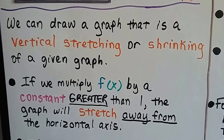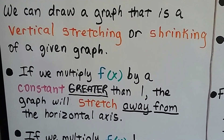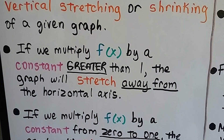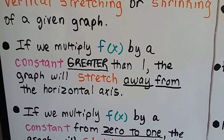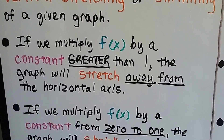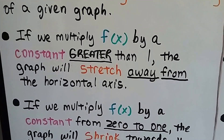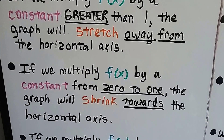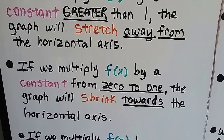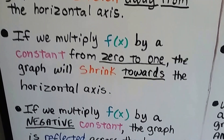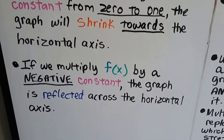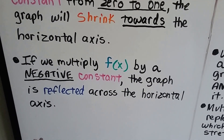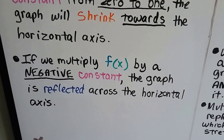We can draw a graph that is a vertical stretching or shrinking of a given graph. If we multiply f(x) by a constant greater than 1, the graph will stretch away from the horizontal axis. If we multiply f(x) by a constant from 0 to 1, the graph will shrink towards the horizontal axis. And if we multiply f(x) by a negative constant, the graph is reflected across the horizontal axis.